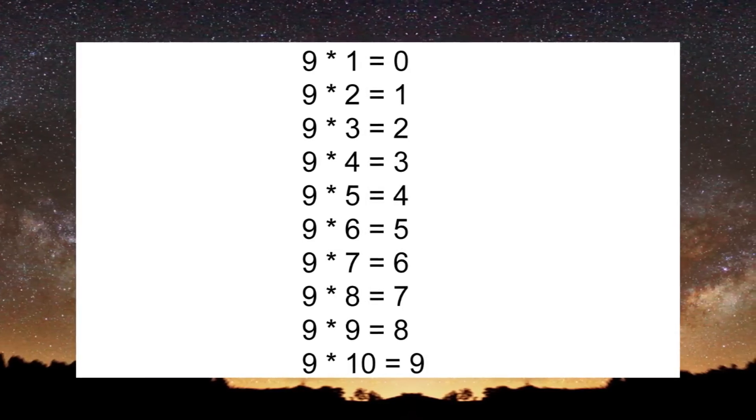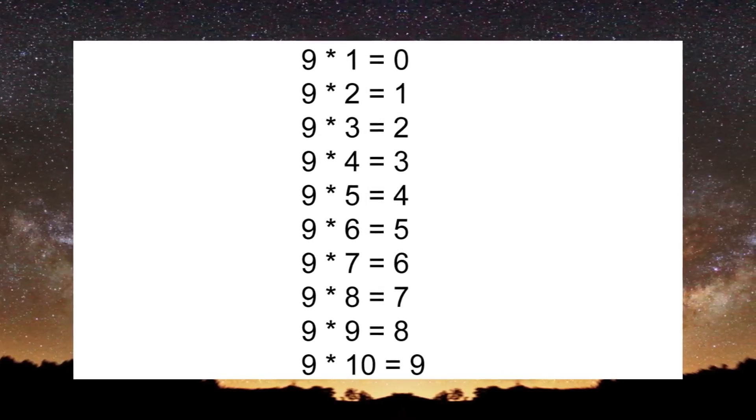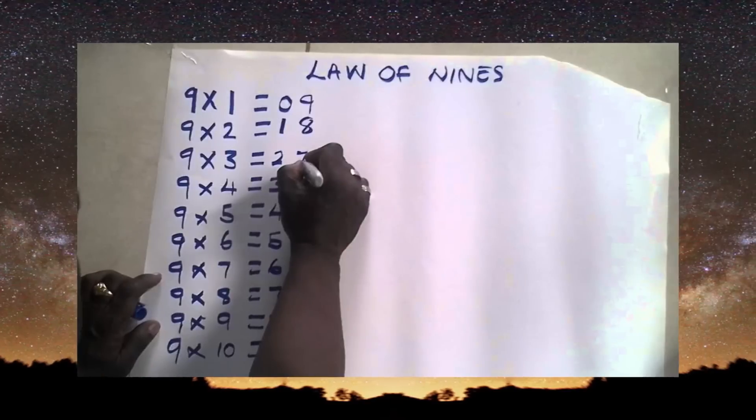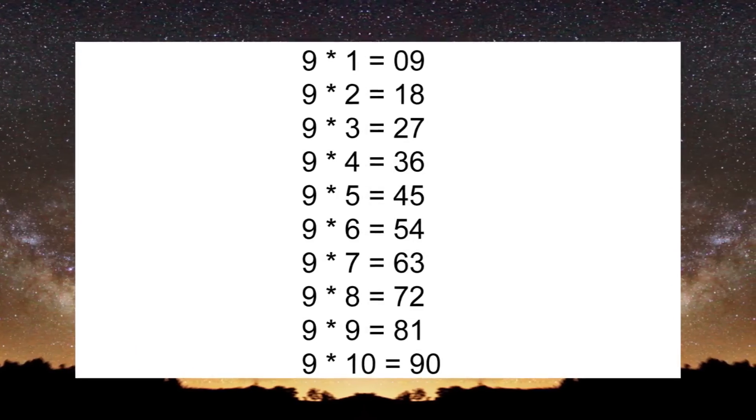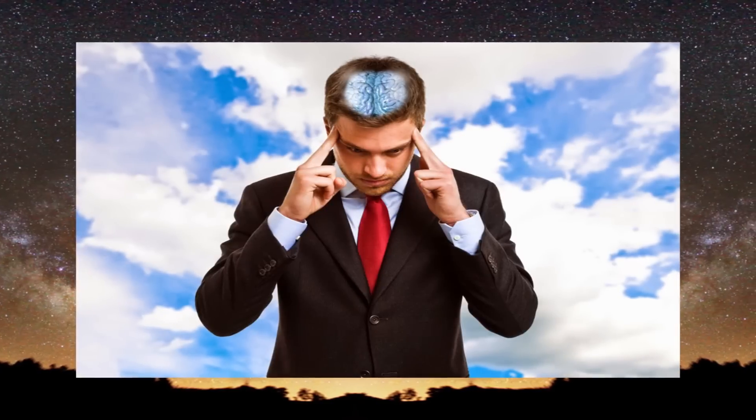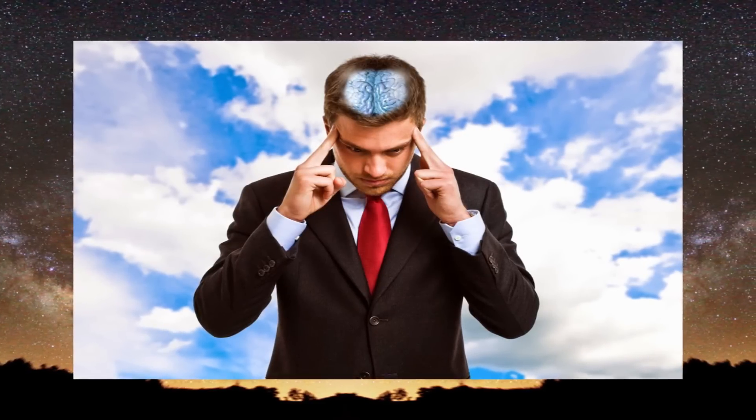Next, write the numbers 0 through 9 going down next to each problem. Next to those numbers, write the numbers going backward, 9 through 0. It will fill in all of the answers for you. Eventually, you should memorize the 9 tables, but for now, this little trick works great.